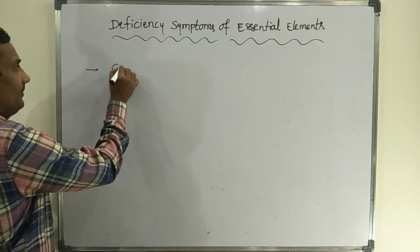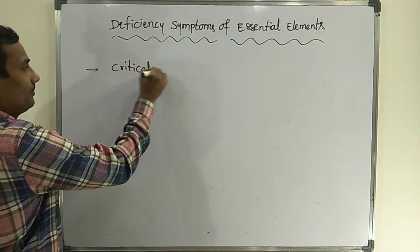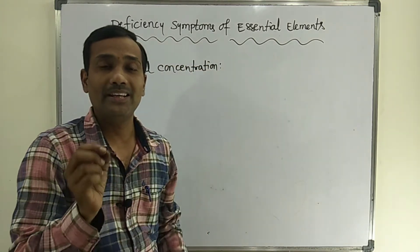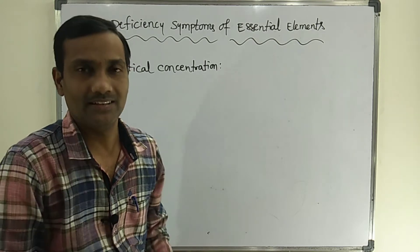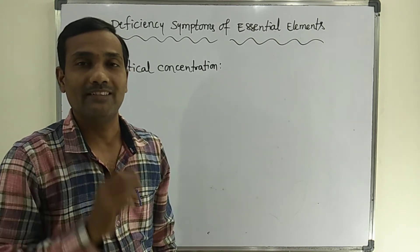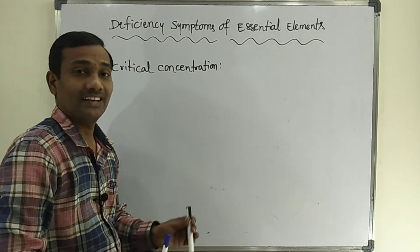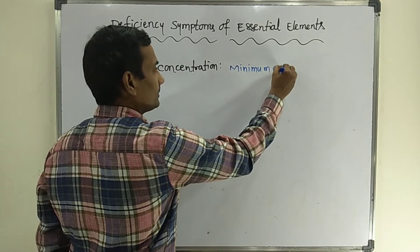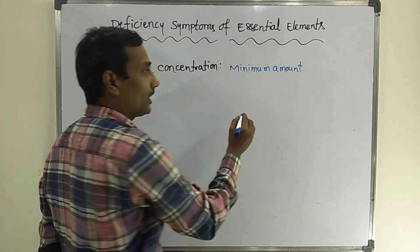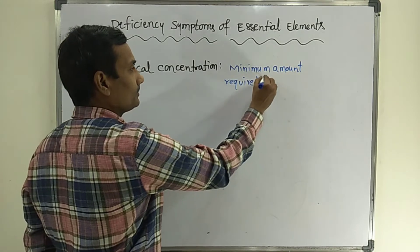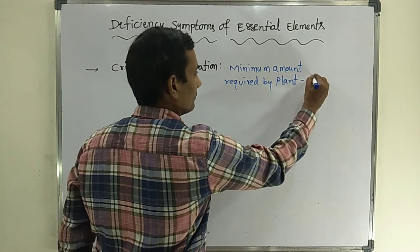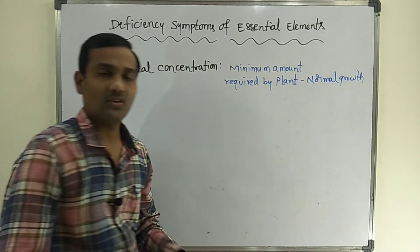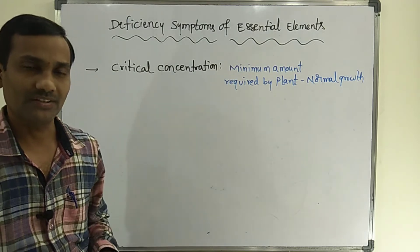First, we will discuss the definition of critical concentration. The minimum amount of mineral required for plant growth and development — that concentration is called critical concentration. The minimum amount required by the plant for normal growth, that concentration is called critical concentration.